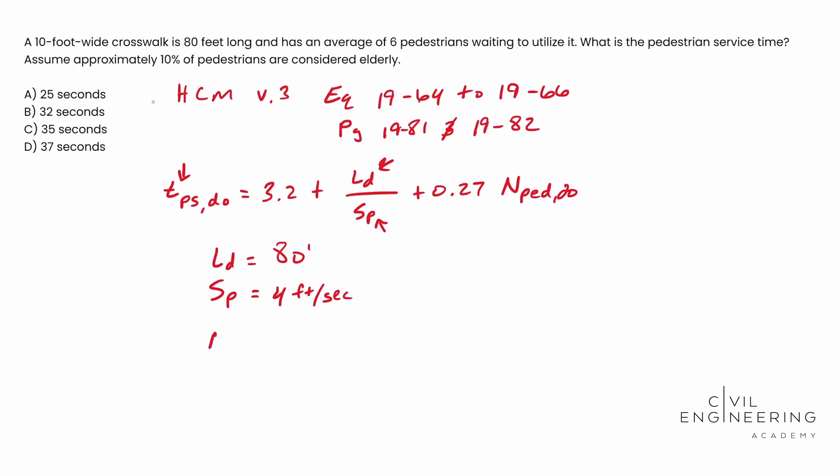And then our number of pedestrians utilizing it, so NPD comma DO, this is going to be six. All right, so it gives that in the problem as well. Now you can kind of see how this is going to be plug-and-chug.